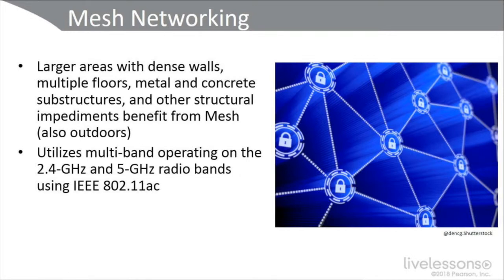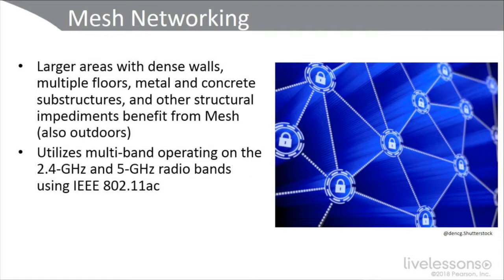Mesh networking utilizes multi-band operation in 2.4 GHz and 5 GHz using typically 802.11ac. The recommendation is to use WPA2, preferably enterprise, and avoid WEP and WPS. However, be aware of the KRACK — Key Reinstallation Attack — against WPA2 from fall 2017, which is especially dangerous on Linux and Android systems. The attacker replaces the key without needing to crack the pairwise master key, so firmware and software patching may be required.